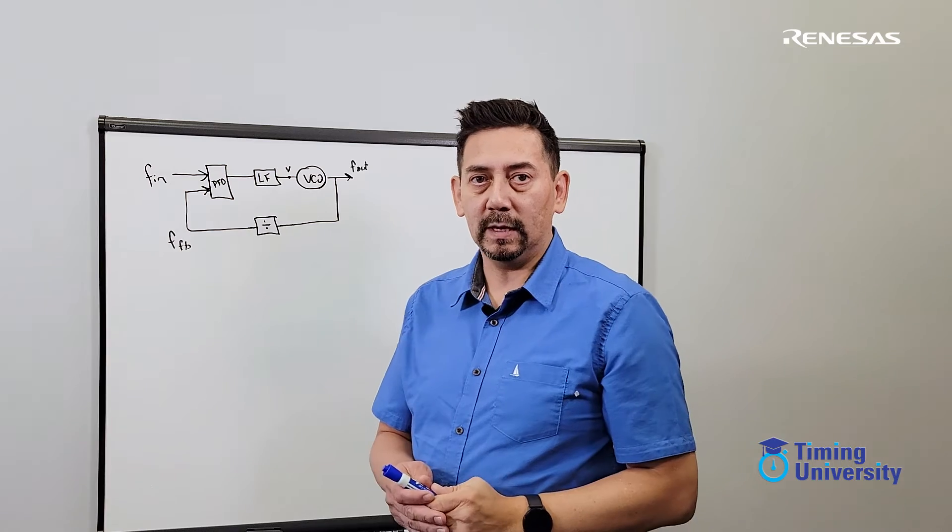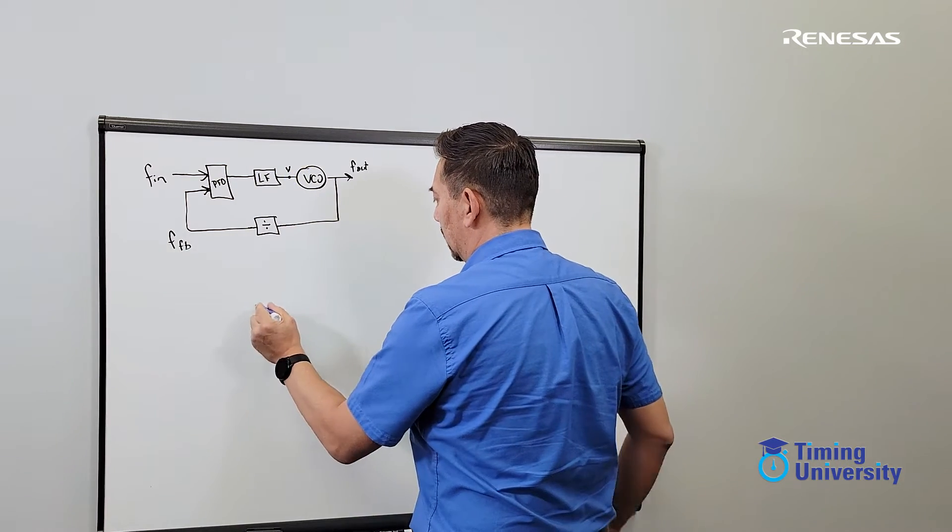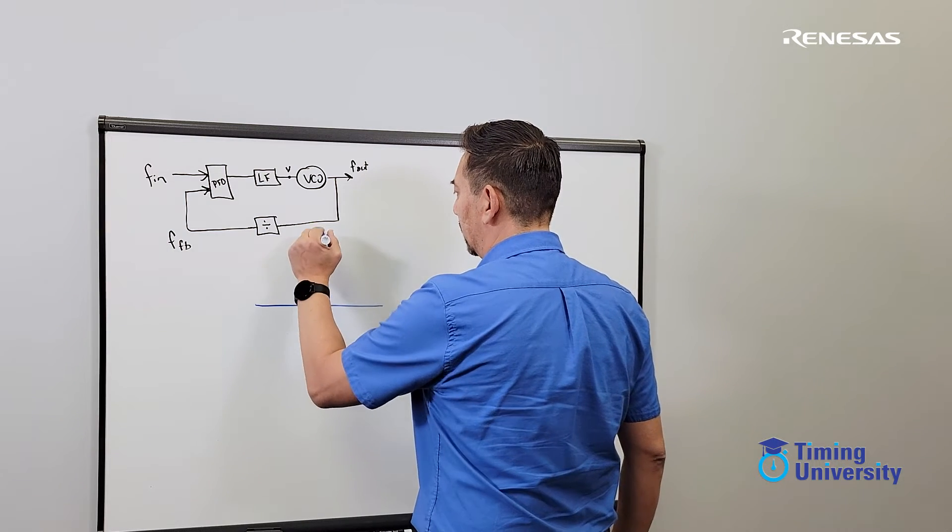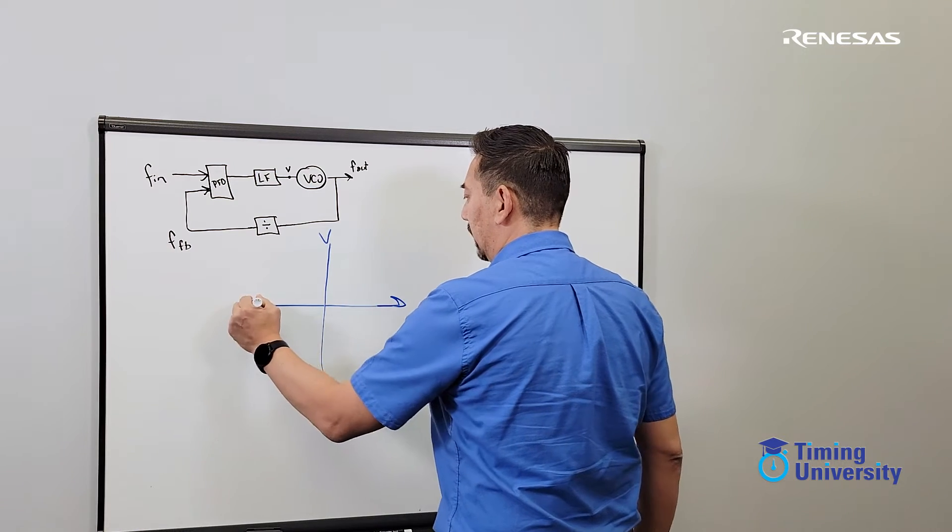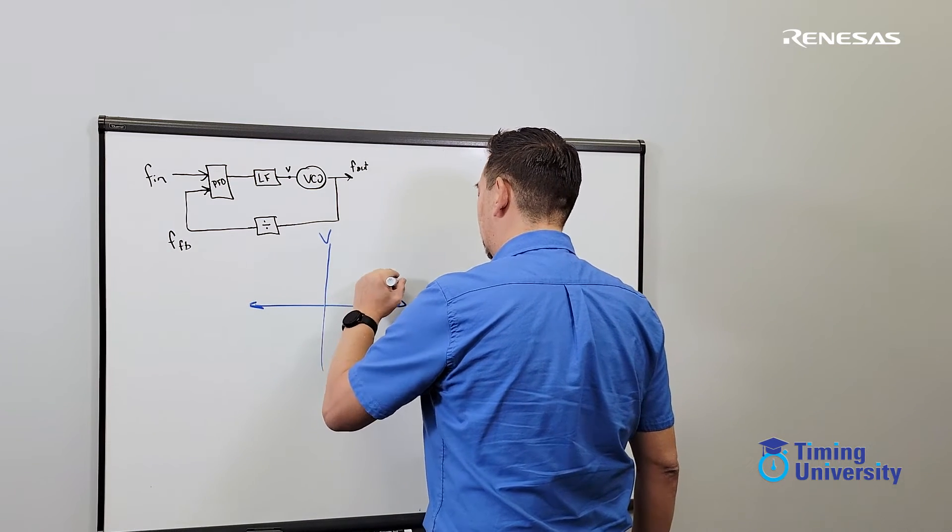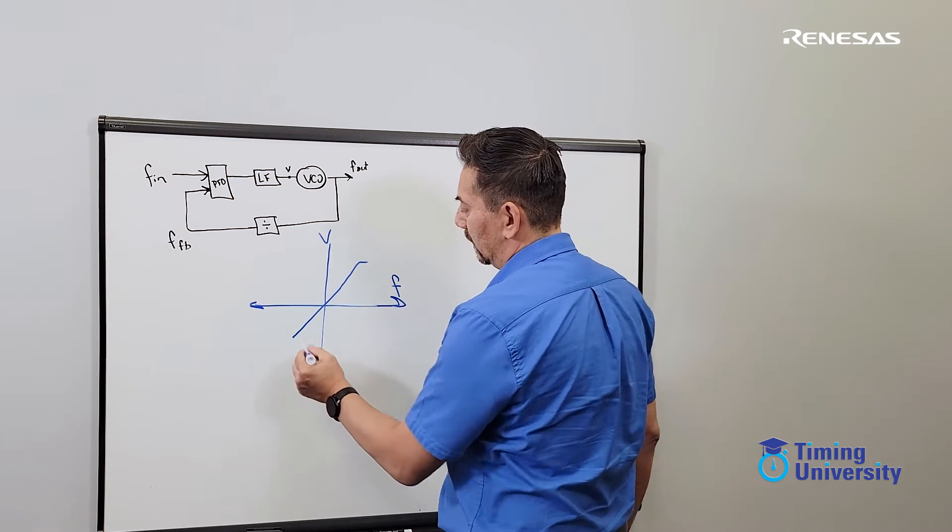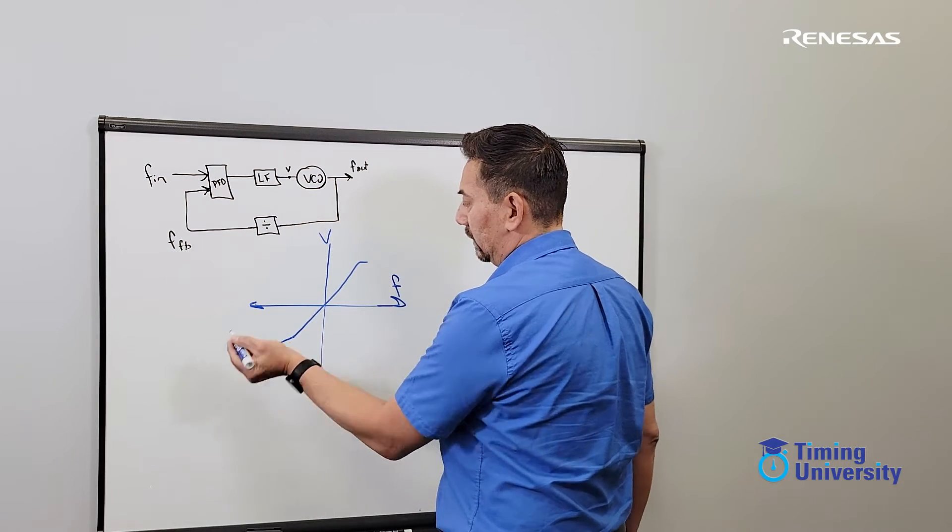So in some of our RF PLLs, we actually take a look at this control voltage. The input to the VCO is going to be this voltage, and there's going to be a corresponding frequency for that voltage. So as we increase the voltage, the frequency increases. And as we decrease the voltage, the frequency decreases.